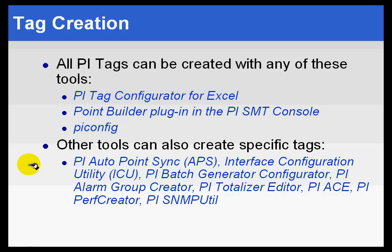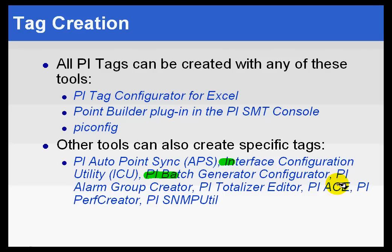There are some other tools that can be used to create specific types of tags. For example, with PI Auto Point Sync — Auto Point Sync is kind of the Holy Grail of this type of system, in which you simply connect up to a data source and everything gets created automatically. Some of our data sources support that, though we do not support a great number yet. For those that do support it, it is a great way to create the tags that you need. We can also create certain tags using our Interface Configuration Utility, certain diagnostic tags. Our PI Batch Generator can create tags required for batch collection. The PI Alarm Group Creator creates certain tags. Totalizer Editor creates totalized tags. ACE creates calculations. PI Perf Creator can create performance monitor tags. And then the PI SNMP Utility creates SNMP tags collected by the SNMP Interface.